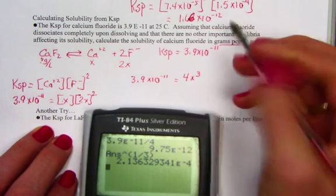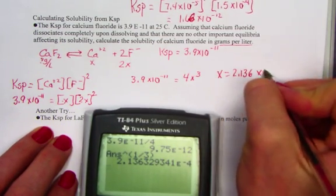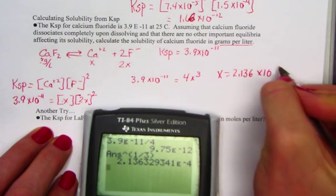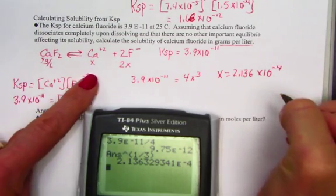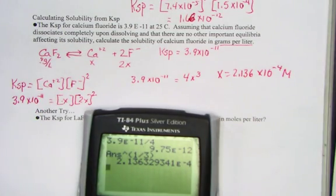I'll carry that over, x is equal to 2.136 times 10 to the negative 4th. And what x is standing for is the calcium ion, so there's a molarity unit there.